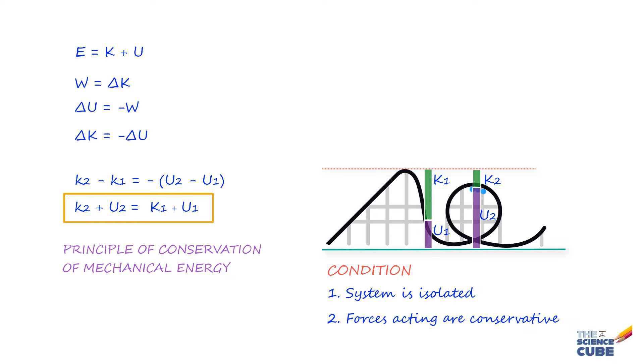So if we agree that the mechanical energy of a system cannot change, we can write delta E is equal to 0. Now let us rewrite this equation as delta K plus delta U is equal to 0. And you will notice that this side is nothing but delta E, because if mechanical energy E is equal to K plus U, then delta E is equal to delta K plus delta U.